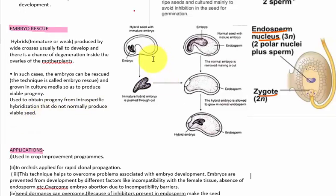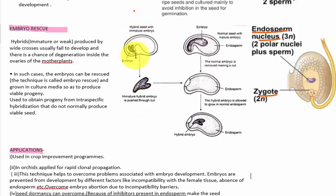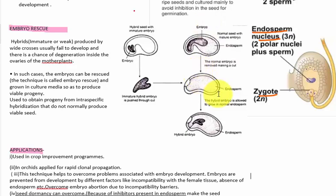This is the diagram of embryo rescue. As you can see, this is the hybrid seed with the immature embryo. The immature hybrid embryo is excised out. Then here is the normal seed with a mature embryo — this is the endosperm part. The normal embryo is removed by making a cut, and then the hybrid embryo is allowed to grow in the normal embryo's endosperm. In this case, the hybrid embryo will produce a viable seed.